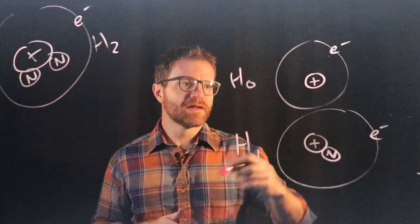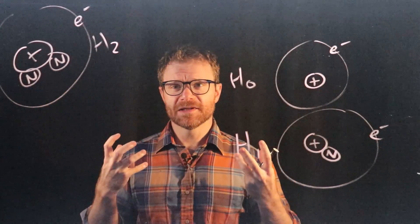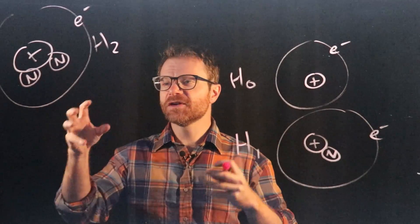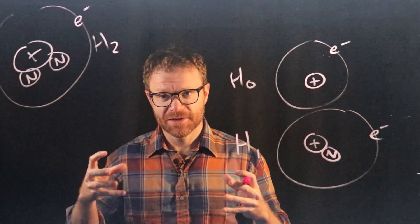So just remember that it's the number of protons that make an element an element. But the number of neutrons can change and these different versions are called isotopes.